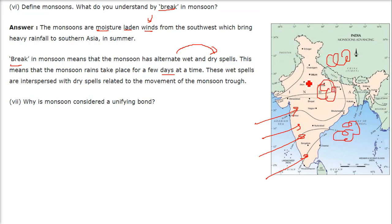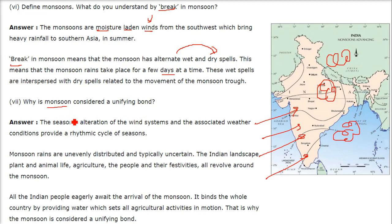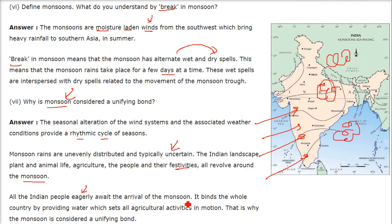Why is the monsoon considered a unifying bond? Every one of us — normal human beings, agriculturists, industrialists — is waiting for the monsoon. The seasonal alteration of wind systems provides a rhythmic cycle of seasons. Monsoon rains are widespread but uncertain; you cannot predict them in advance. The Indian landscape, plant and animal life, agriculture, and people's festivities all revolve around the monsoon. It binds the whole country by providing water which sets all agricultural activities in motion — that is why the monsoon is considered a unifying bond.